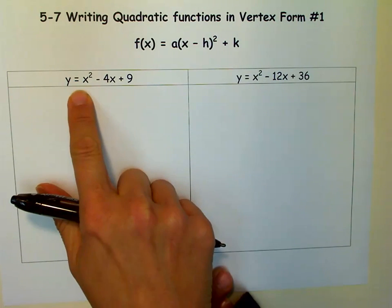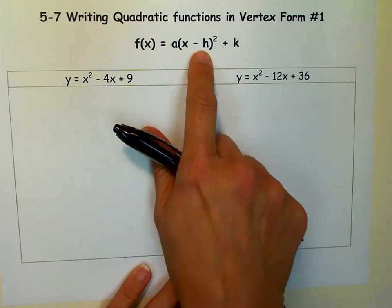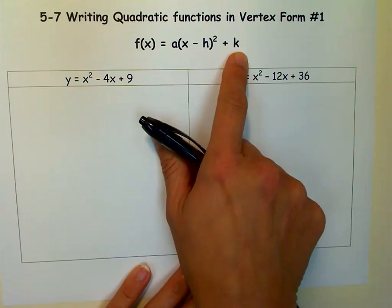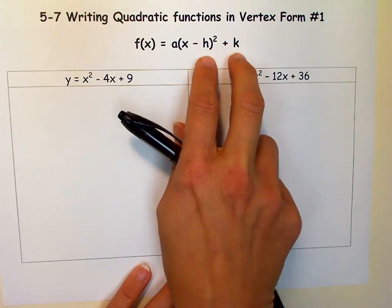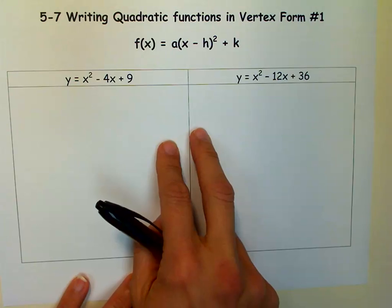So right now you see that it's in ax squared plus bx plus c form, and we're going to get it in a times the quantity of x minus h squared plus k form, because then hk is our vertex. That's why it's called vertex form, because when we look at it in this form we can automatically tell what the vertex is.